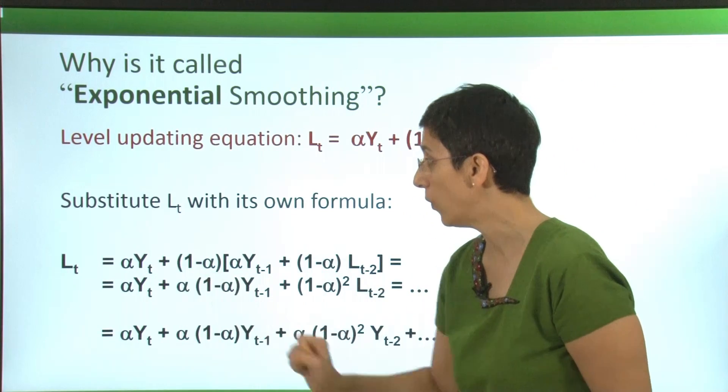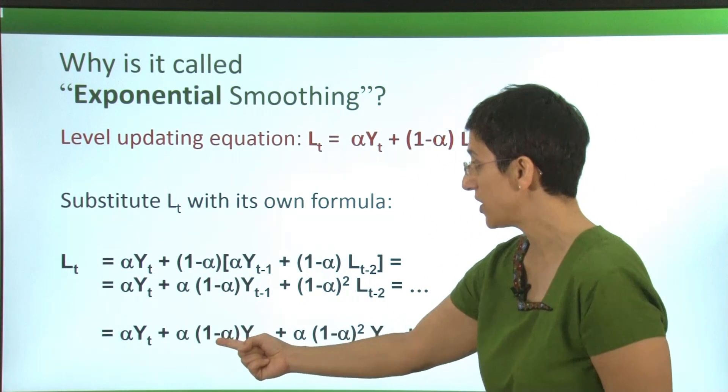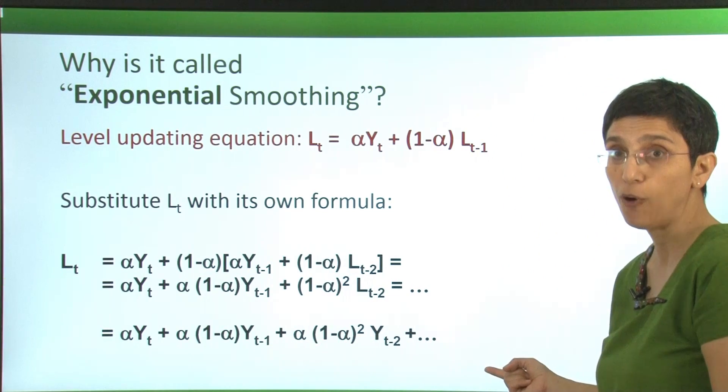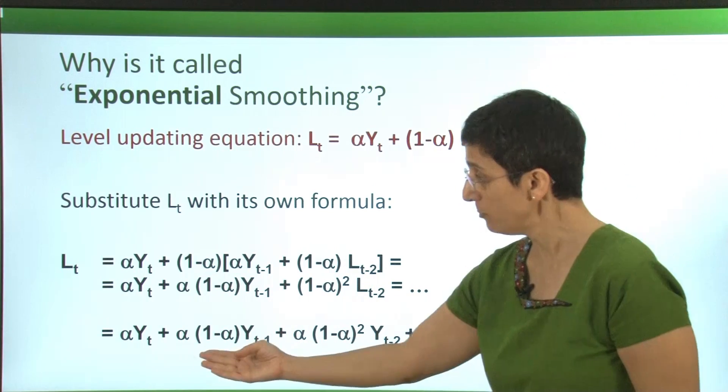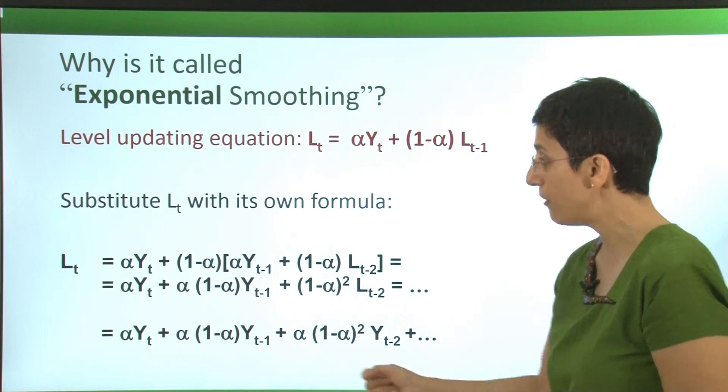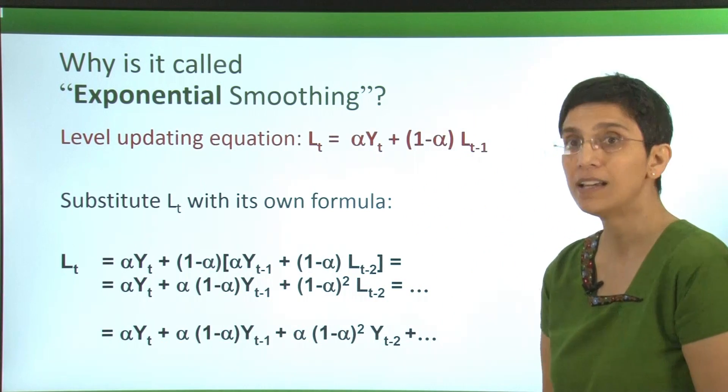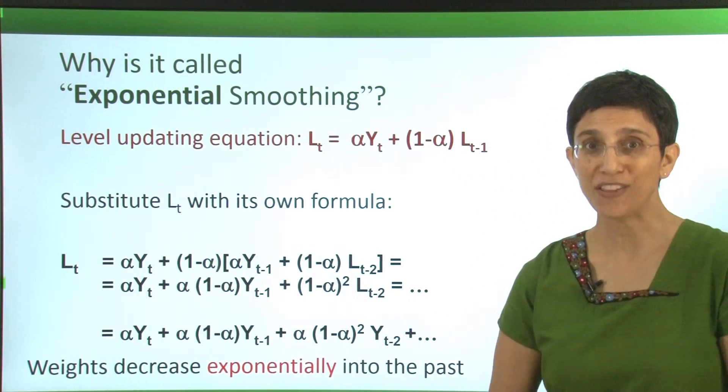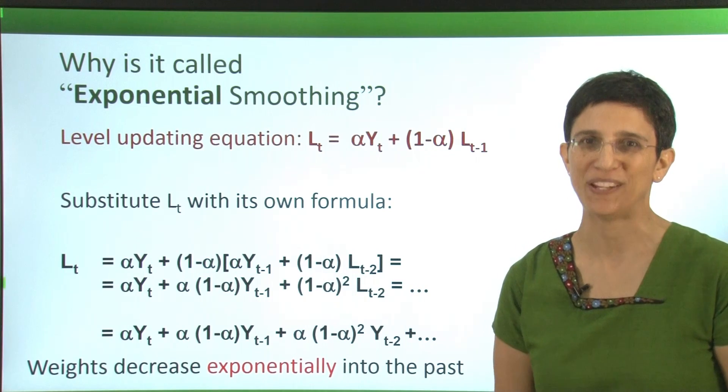Alpha times y_t plus alpha times (1 minus alpha) y_t minus 1 and so on and so forth. We see that we end up with an average of all our values in the series, but they have weights that are decaying exponentially. Because these weights are decaying exponentially, we call this method exponential smoothing.